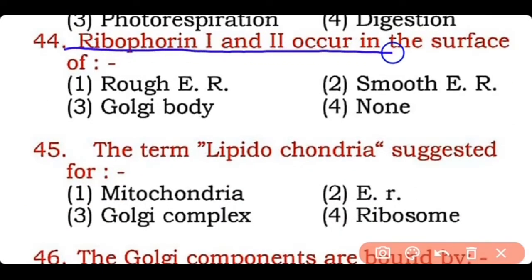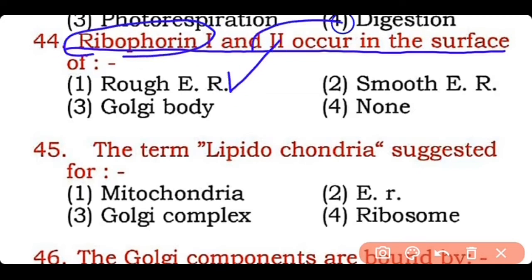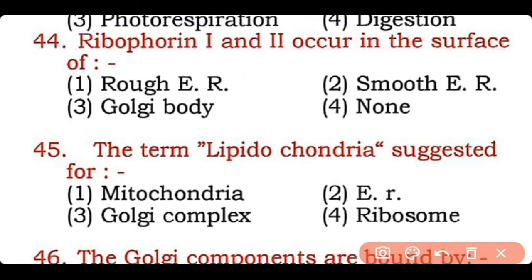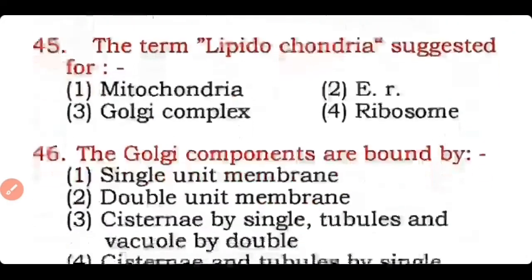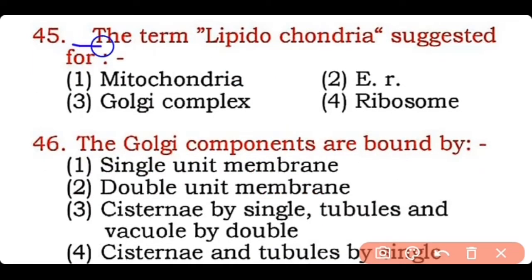Question 44: Ribophorin I and Ribophorin II occur on the surface of — rough endoplasmic reticulum, smooth endoplasmic reticulum, Golgi body, or none of the above? Correct answer is option one — Ribophorin I and Ribophorin II are present on the surface of rough endoplasmic reticulum and help in the attachment of ribosomes to the RER.